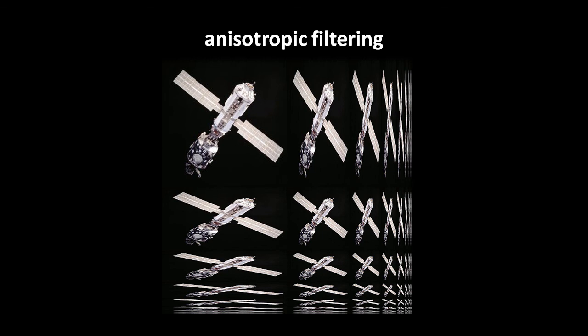Another approach is to pre-compute trapezoidal versions of the texture. These details are beyond our scope, so we won't cover them here. Suffice it to say that anisotropic filtering has many variants with different trade-offs between performance and quality.